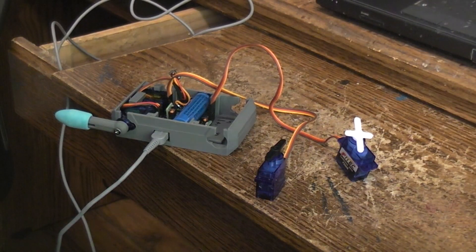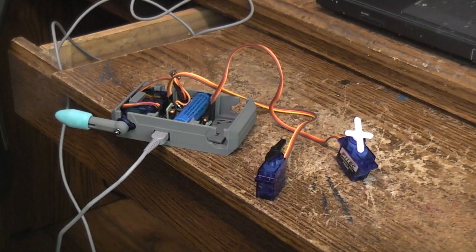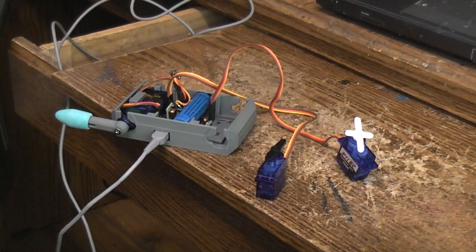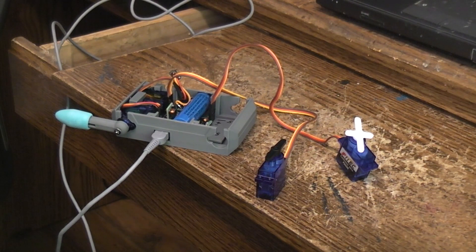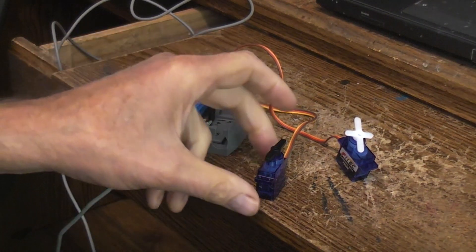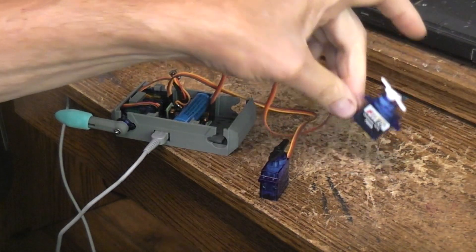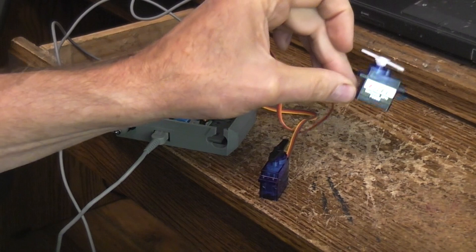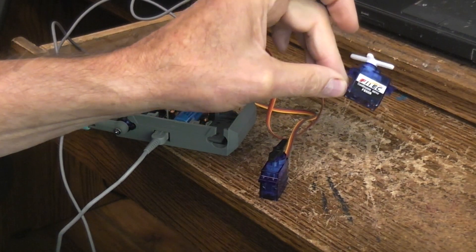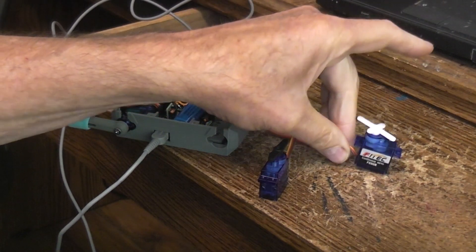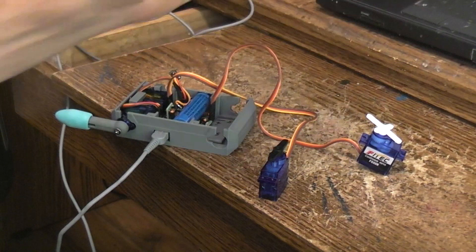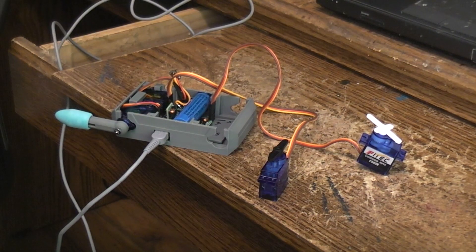Okay, today I thought I'd show you some of the differences between some of the 9G servos. Now the 9G stands for 9 gram and basically it's the size of the servo. They're saying the whole thing should weigh 9 grams, which is 0.31 ounces or something like that.